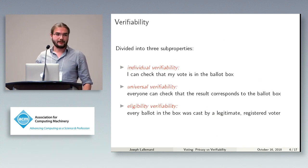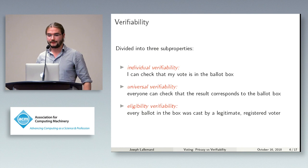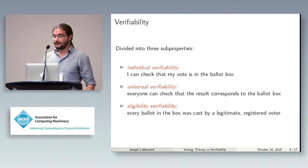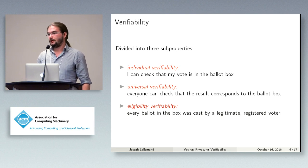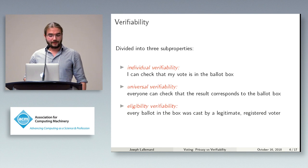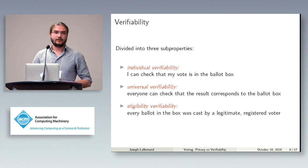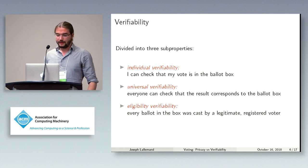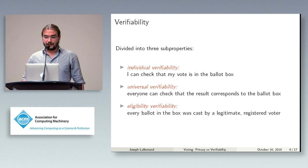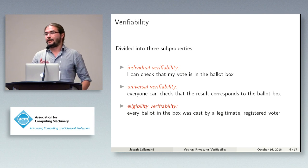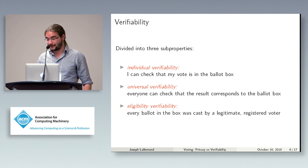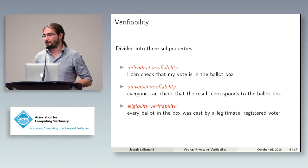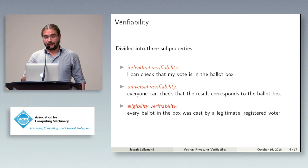Verifiability is usually defined as the conjunction of three sub-properties: individual verifiability — I should be able to check that my vote is correctly put in the ballot box; universal verifiability — everyone should be able to check that the published result corresponds to the content of the ballot box; and eligibility verifiability — every ballot present in the ballot box should have been cast by a legitimate voter who was allowed to vote. Together, these three properties compose verifiability.